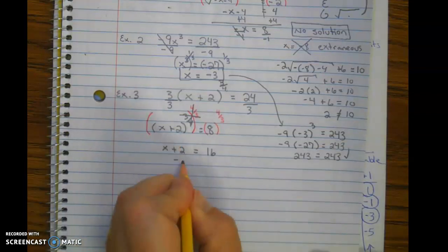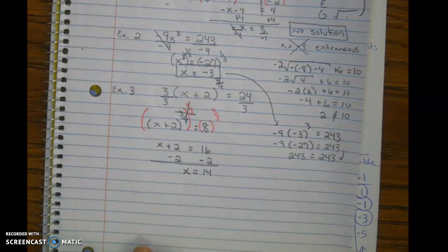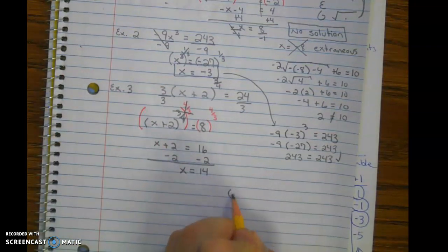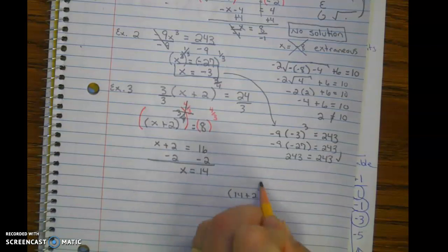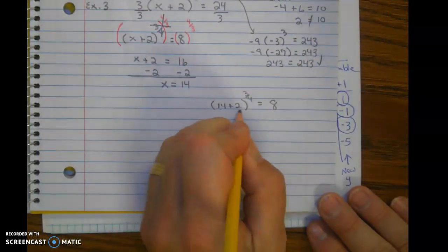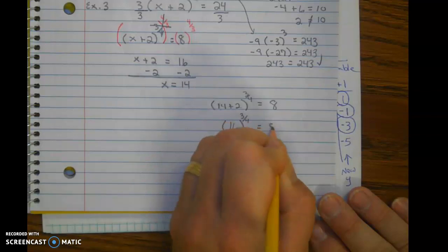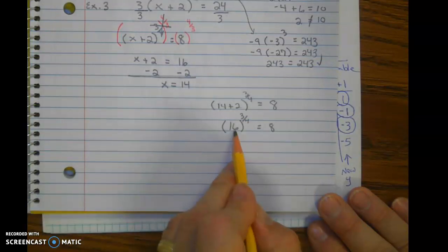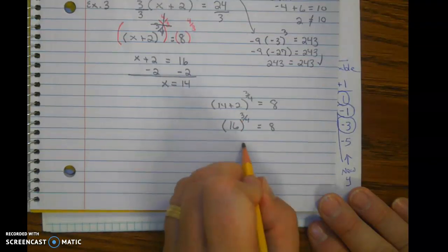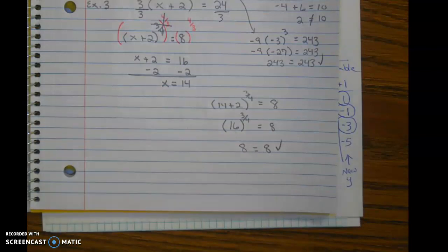Now we're inside the grouping symbol. x equals 14. Checking our answer. So we have 14 plus 2 to the 3 fourths equals 8. The fourth root of 16 is 2 because 2 times 2 times 2 times 2 is 16. And then 2 to the third power is 8. Checks out. All right. Thanks for watching the video. I'll see you in class.